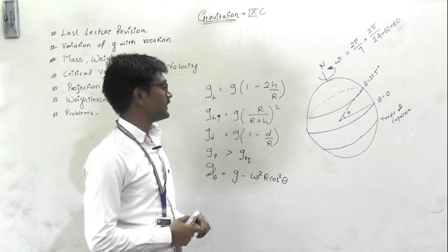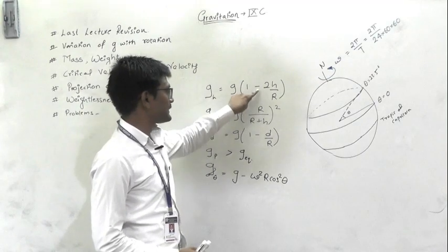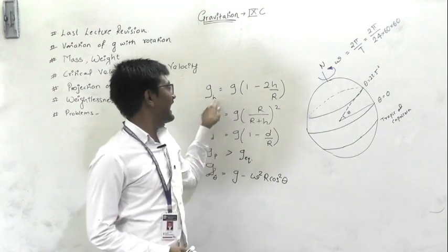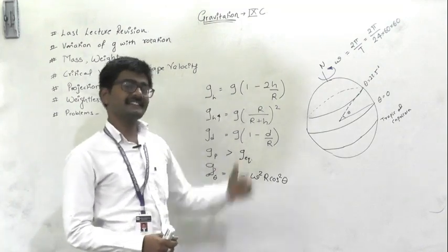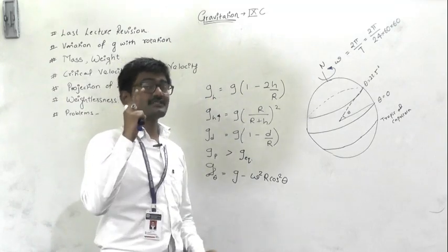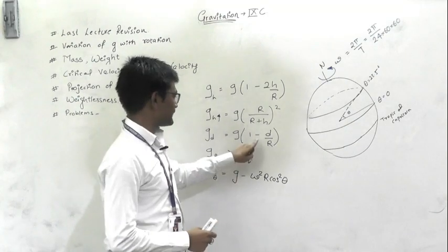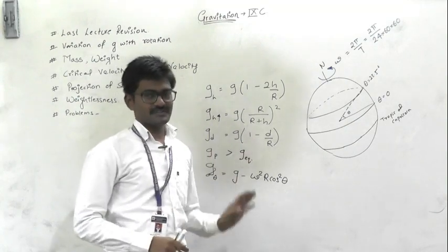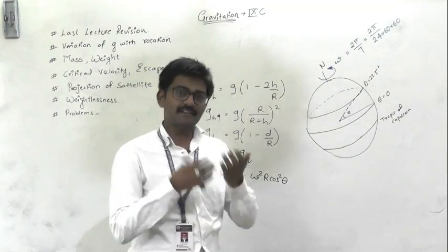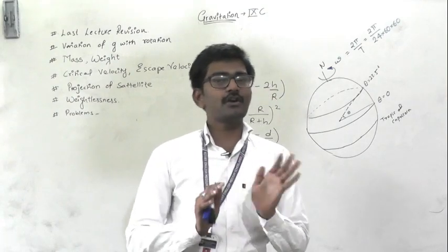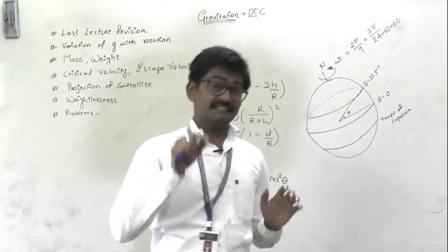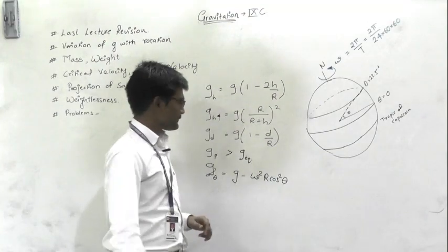Yesterday we also drew a graph comparing these three situations. At higher heights, gravitational acceleration reduces very quickly — it's a minus-2 relationship, meaning it reduces two times faster. But at depth, it doesn't reduce as much. So the lesson is: as you rise higher, your weight becomes less much more quickly than as you go deeper.